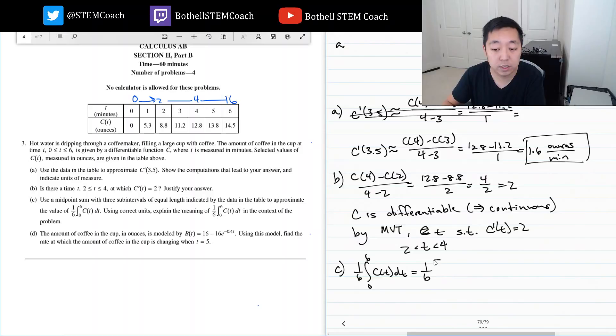So my sum is one-sixth. We're approximating this. The width of this interval is two. The height of this interval is c of 1, which is 5.3, plus two times 11.2, the midpoint at 3, plus two, which is this interval width, times the midpoint 13.8. That's the midpoint sum.